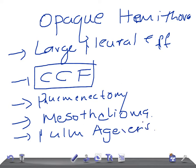So what are the causes for an opaque hemithorax? It's going to be large pleural effusion, collapse, consolidation, or fibrosis. It could be pneumonectomy has been done, or mesothelioma could be there with thickening, or pulmonary agenesis with no lungs. Okay guys, so thank you so much for watching this video. Take care.